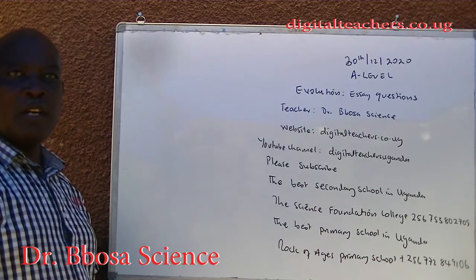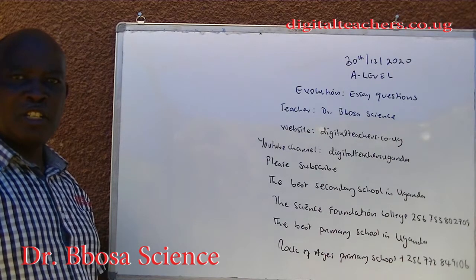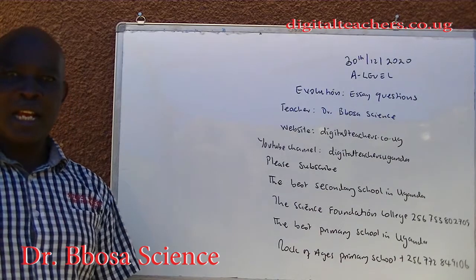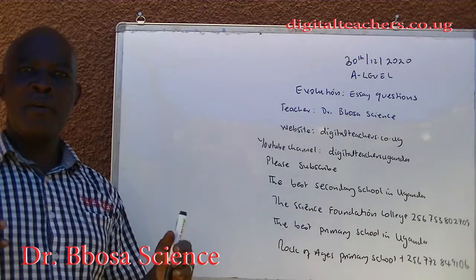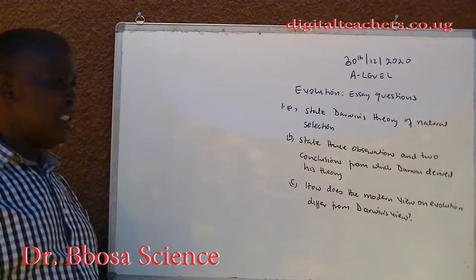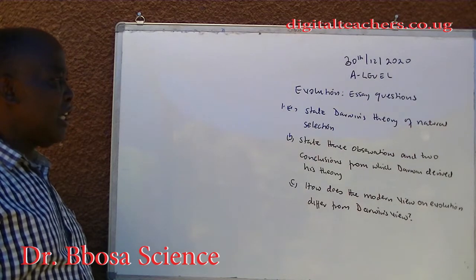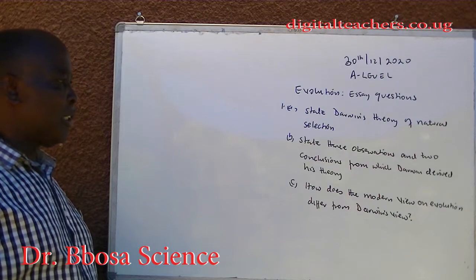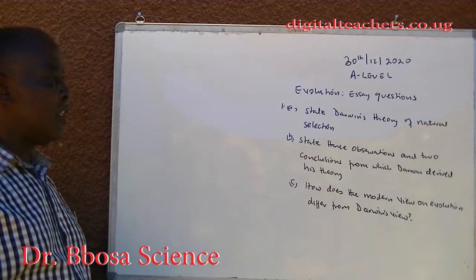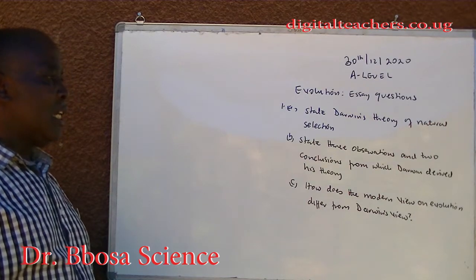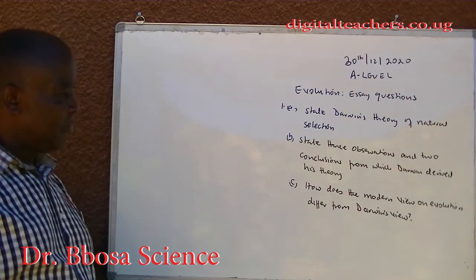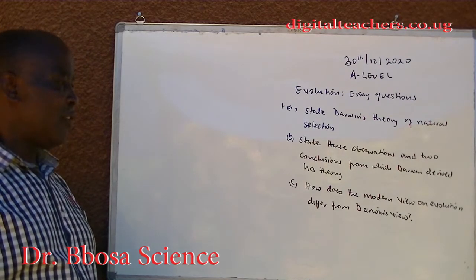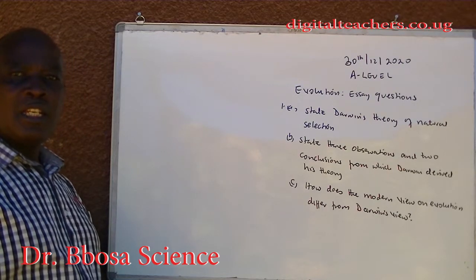The best secondary school in Uganda is the Science Foundation College. The best primary school in Uganda is the Slope of Ages Primary School. Number 1. A. State Darwin's theory of natural selection. B. State three observations and two conclusions from which Darwin derived his theory. C. How does the modern view on evolution differ from Darwin's views?